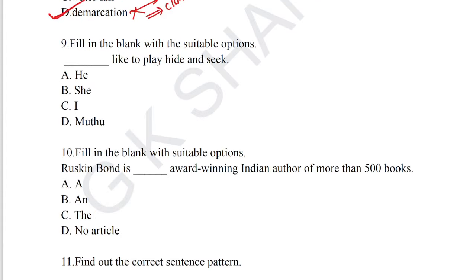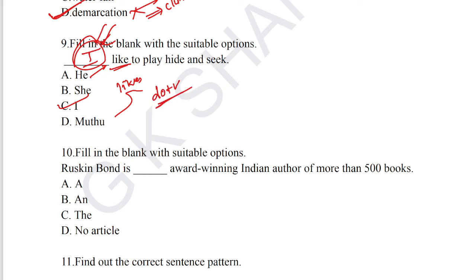Question number 9: fill in the blank with suitable options. 'I like to play hide and seek.' Option C, 'I', is the subject and correct answer. When using 'he', the verb must change to the 'does' form: 'he likes to play hide and seek.' When using the subject pronoun 'I', we use the base verb form with 'do'.